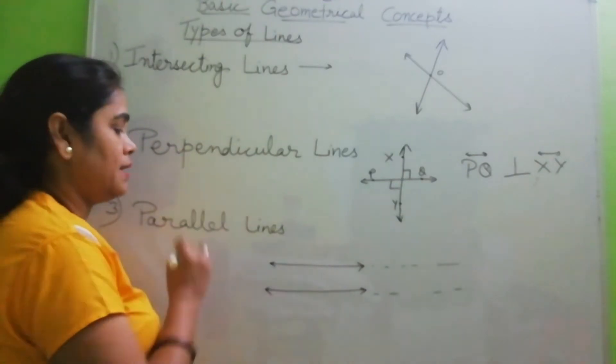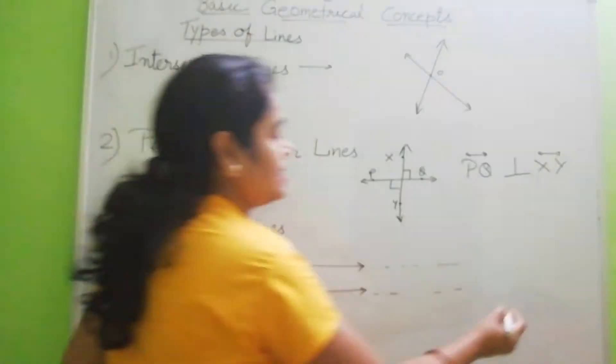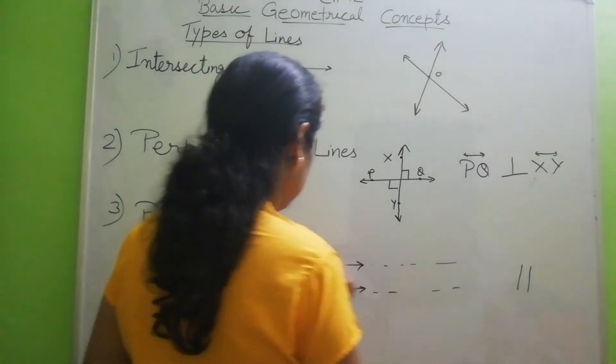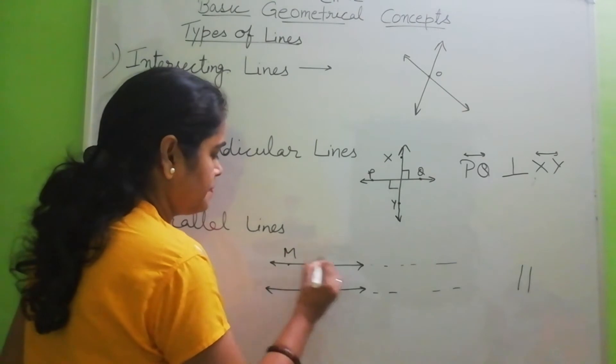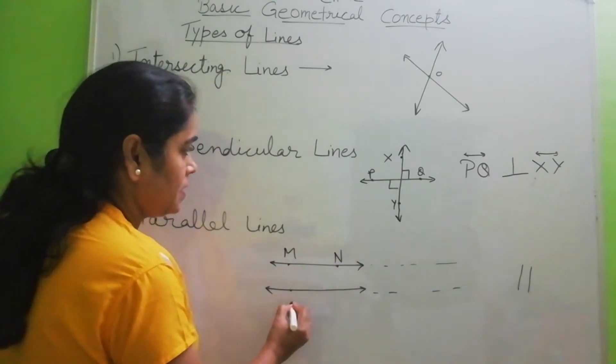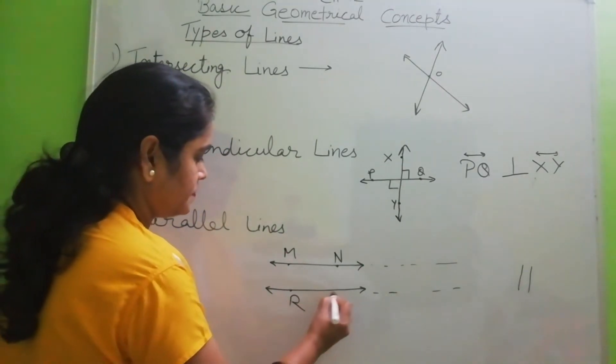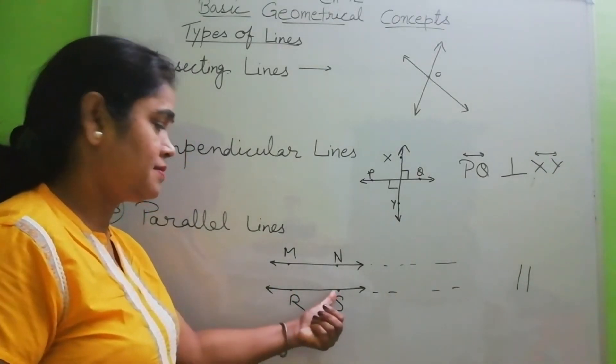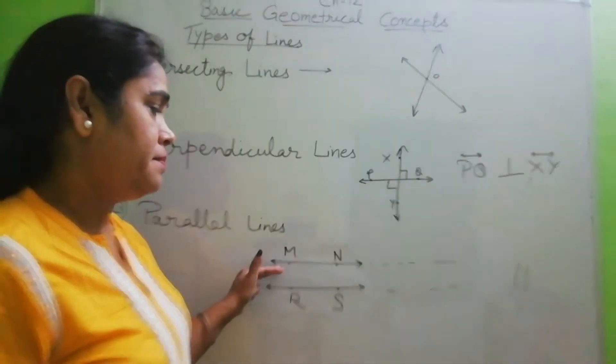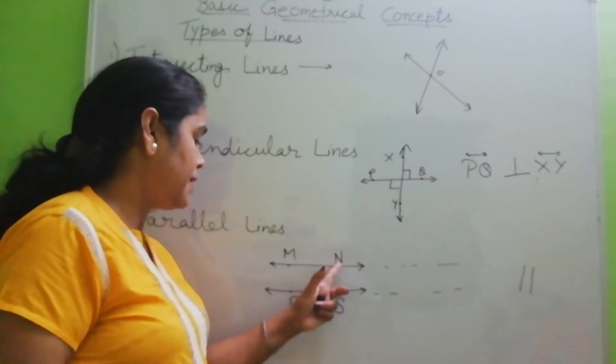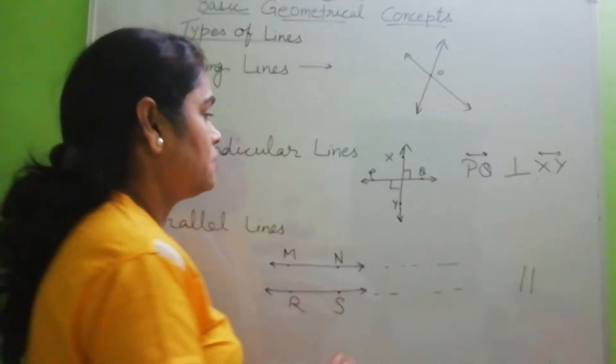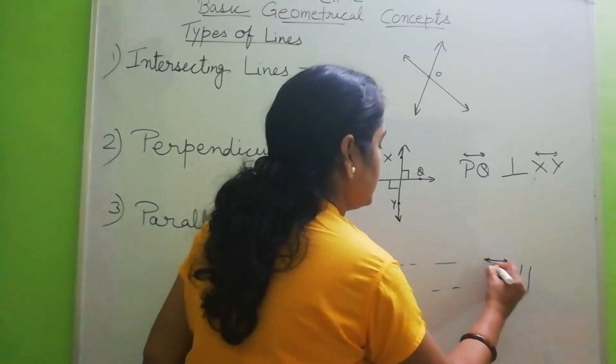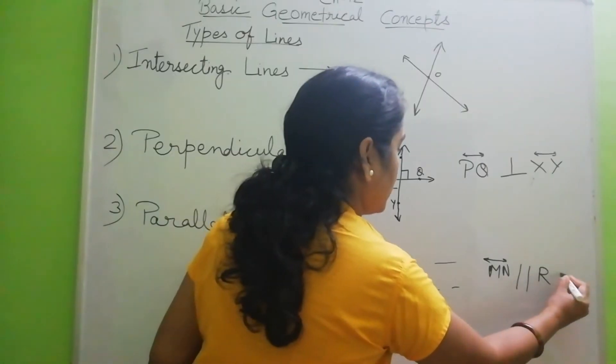And when they are parallel, parallel sign is denoted by line parallel. So we can say, suppose this parallel line is M and naming a line you know, we can give any capital letters, we can give two dots at any point and name them. The name I have given here MN and RS. So we can write MN line is parallel to line RS.